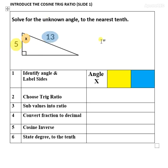Given these two pieces of information, we fill in the boxes accordingly. We identify the adjacent as 5 units and the hypotenuse as 13 units.